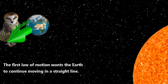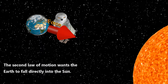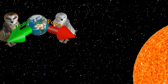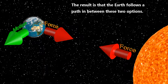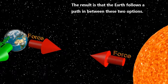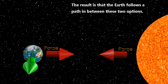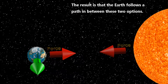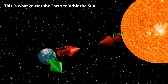The first law of motion wants the Earth to continue moving in a straight line. The second law of motion wants the Earth to fall directly into the Sun. The result is that the Earth follows a path in between these two options, and this is what causes the Earth to orbit the Sun.